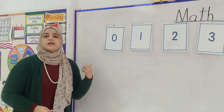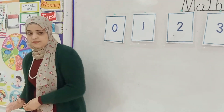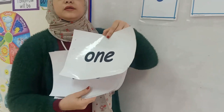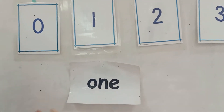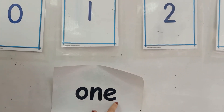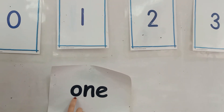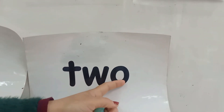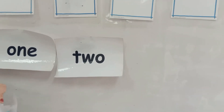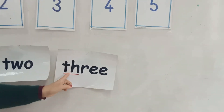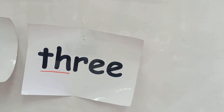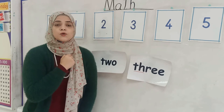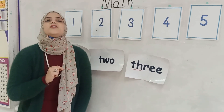Now we are going to revise the numbers in words. Are you ready? Let's start. What is this word? Yes, one. We read it from left to right, as we learned before. One. Two. Three — the tip of your tongue between your teeth. Three, three. Don't say 'tree', three is wrong. Three.